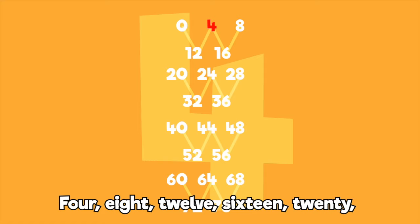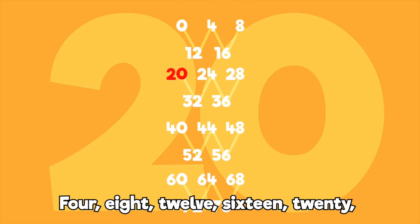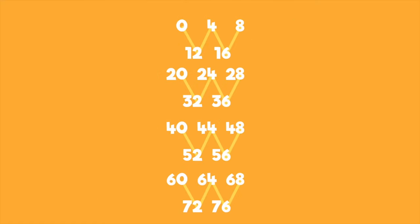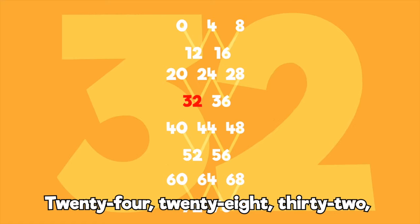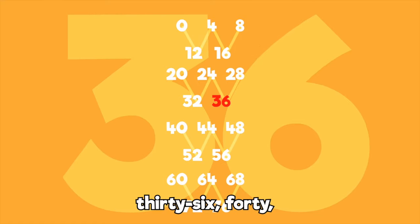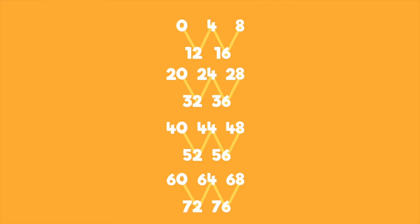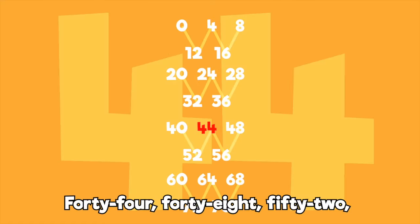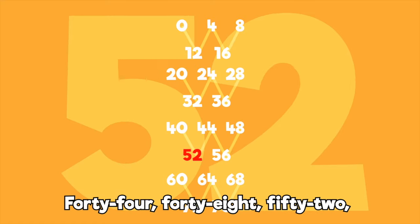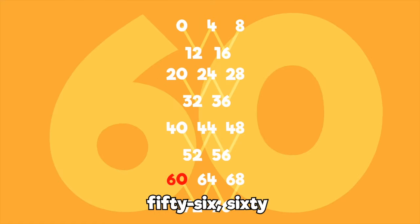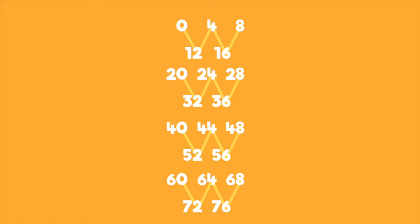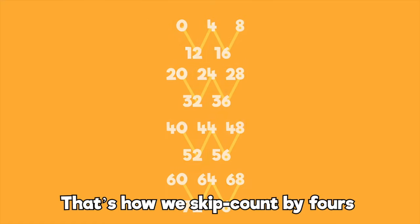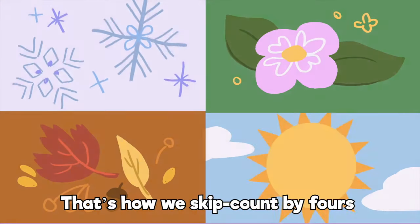4, 8, 12, 16, 20, 24, 28, 32, 36, 40, 44, 48, 52, 56, 60. That's how we skip count by 4s.